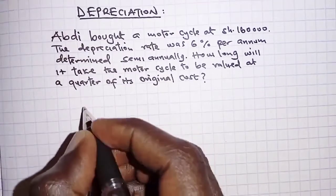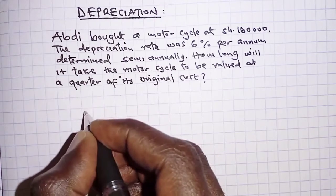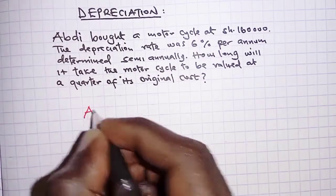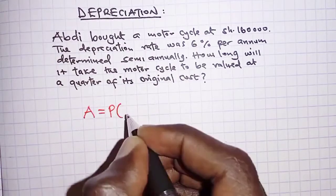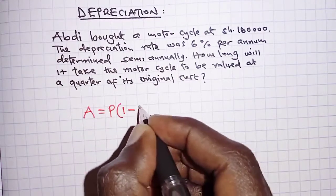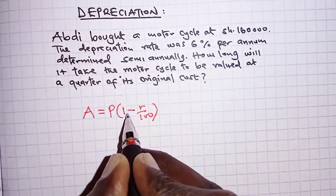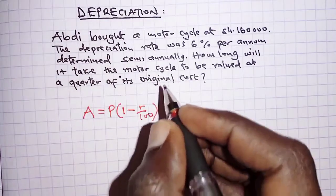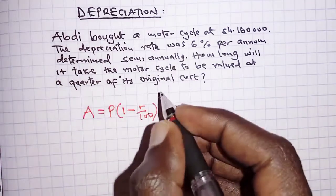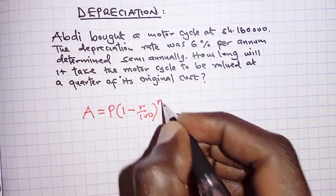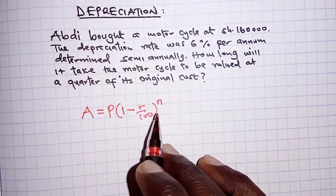The first thing we are going to begin by stating the formula for depreciation. We are going to use the compound interest formula: Amount is equal to Principal into one minus the rate over 100 — we subtract because it is depreciating; if it were appreciating, we would have addition — and then we raise it to n, where n is the time taken for the depreciation.